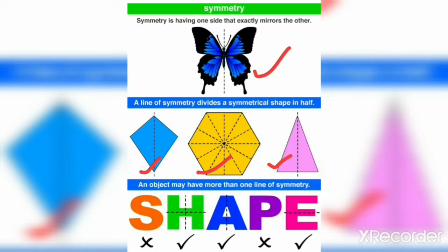What about letters? We cannot divide S. H can be divided into two equal parts — there are two lines of symmetry. Letter A has one line of symmetry. Letter P has no line of symmetry. And letter E has one line of symmetry.